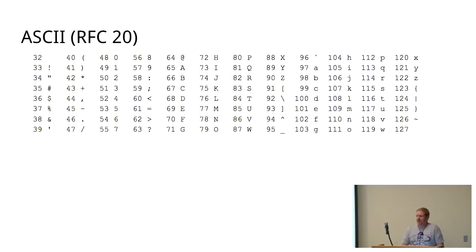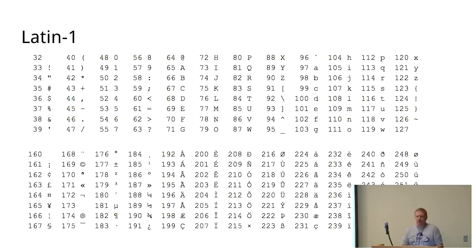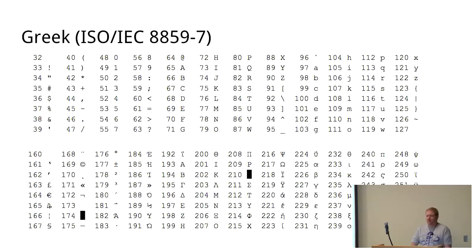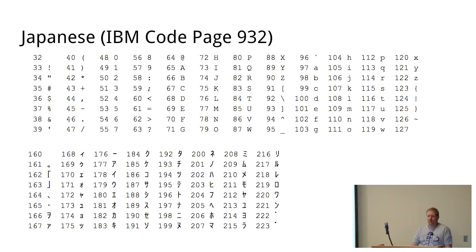But if you start having to deal with other languages, it gets a little more complicated. Beyond ASCII, there's an encoding called Latin-1 that adds a lot of accented characters, some more currency symbols, and a few other characters useful in representing Western European languages. There's another encoding, Latin-2, with some different accented characters. Beyond Western European languages, you have things like Greek with a different set of characters, and non-European languages like Japanese, Chinese, and Korean with characters beyond the ASCII character set.